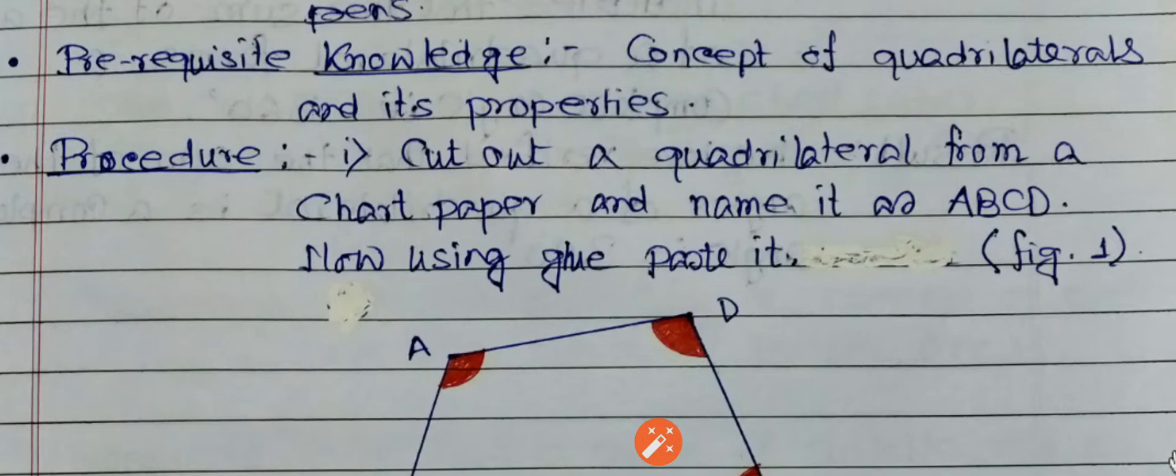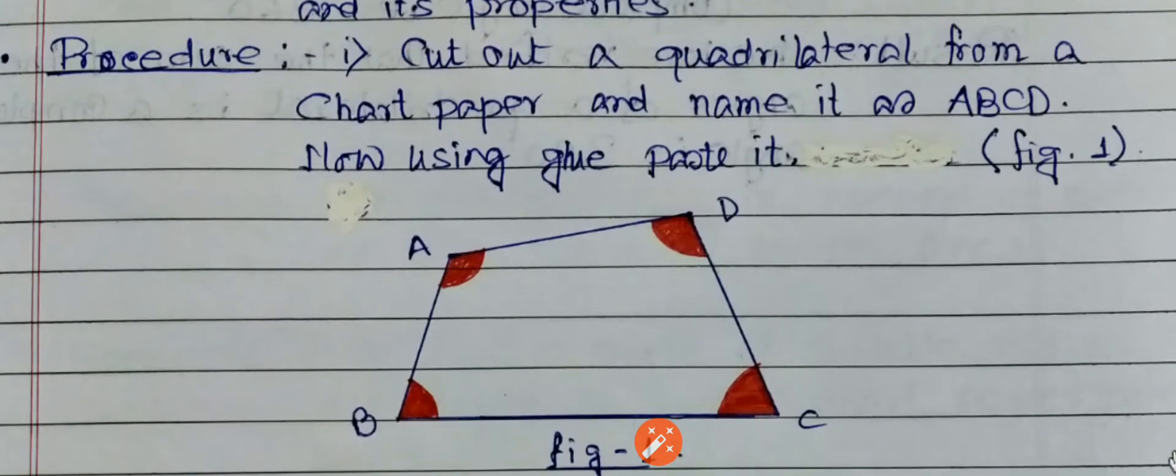Now we are going to the procedure. First we need to cut a quadrilateral from a chart paper. We can take a colored chart paper and cut a quadrilateral.